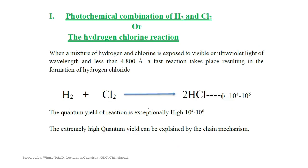We have seen primary and secondary processes in the previous video, that is quantum yield. Let us now learn the photochemical combination of H₂ and Cl₂. This reaction is an example of a high quantum yield reaction.